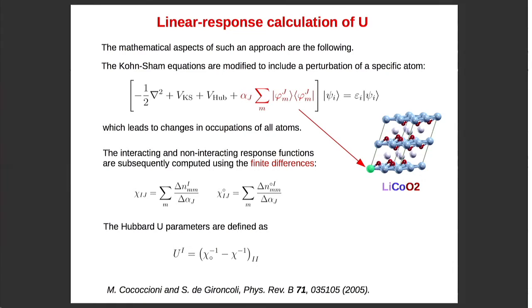Then, using the finite differences, we can compute the change of the occupation matrices with respect to the change in, with respect to this parameter, strength parameter. So we can compute the chi, which is the interacting response function, and chi naught, non-interacting response function. Essentially, chi naught is the value computed after the first iteration when we don't have Hartree and exchange correlation contribution. And chi is the self-consistent one. And finally, we have to invert. These are the matrices with dimension I and J which label the atoms. And so we have to invert chi and chi naught and take the difference. And this will give us, again, the matrix. And we take the diagonal of this matrix, which is the Hubbard U parameter, the on-site effective Coulomb interaction. This is the U parameter.